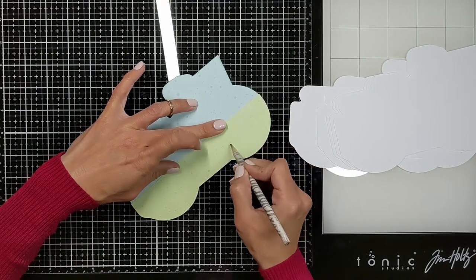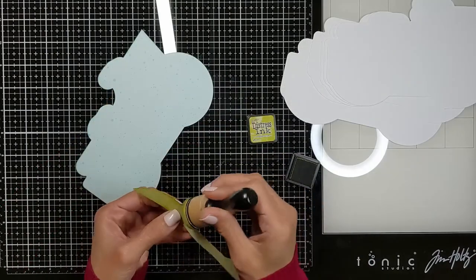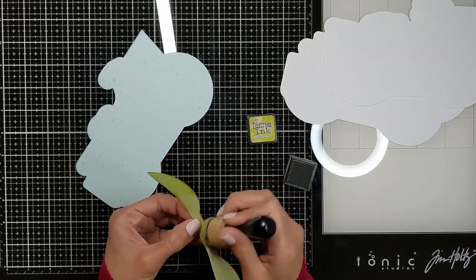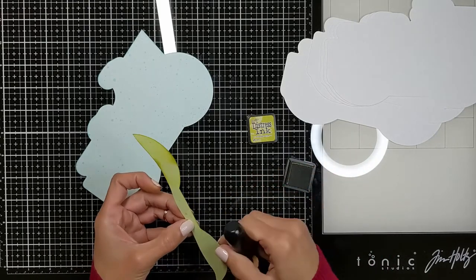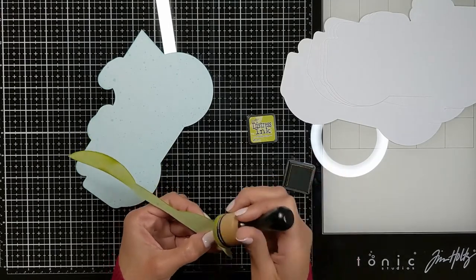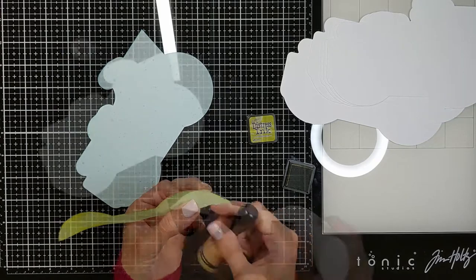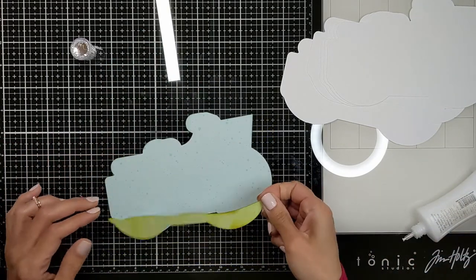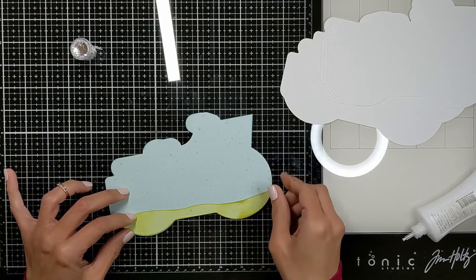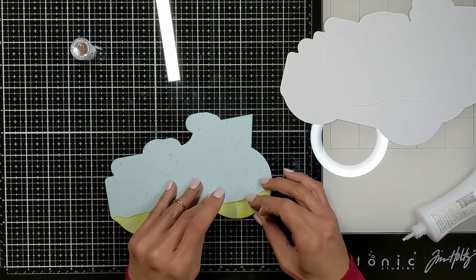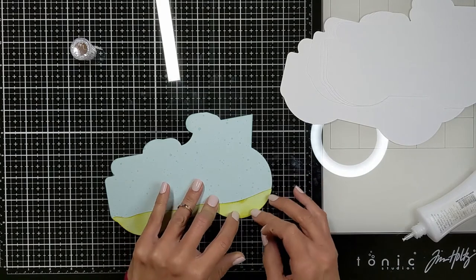Then I'm using crushed olive distress ink to ink the edges and then I'm going to use my glue and stick the grass directly to the cover. The blue represents the sky and the hillside here is green sort of grassy hillside or the grassy color hillside. Then I'm going to stick the whole thing to the thick cover. I want the pages to be sturdy because I don't want them to be flimsy.